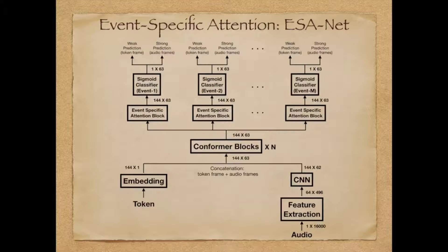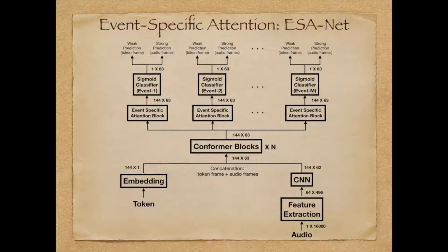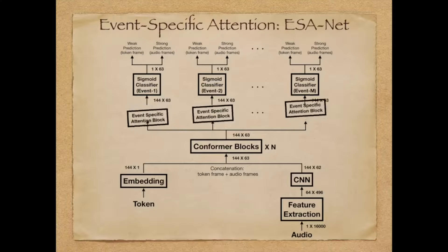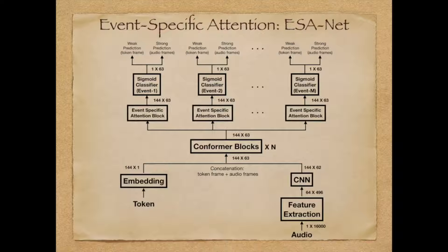In order to aid the network in learning event-specific representations which are robust to the presence of other events, we propose Event-Specific Attention Network, or ESA-Net in short. The idea, as shown here, is very simple: to have a self-attention block in the detection arm of each event.